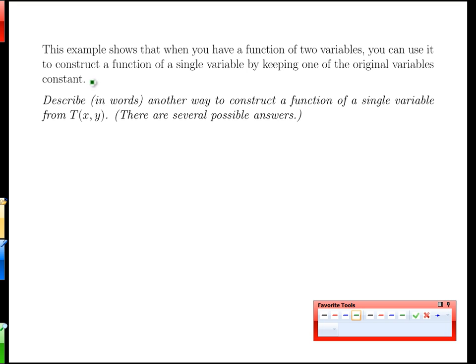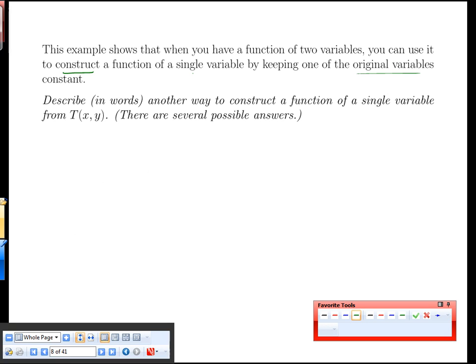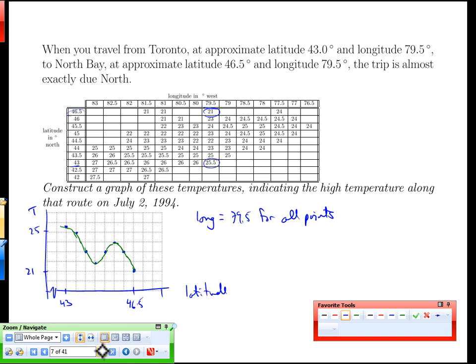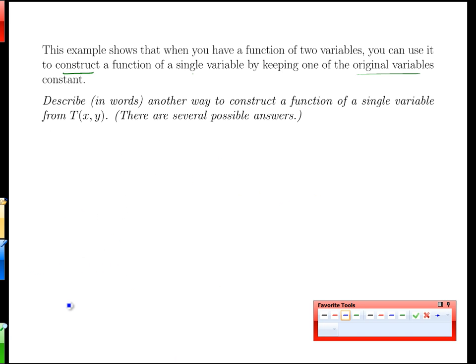What this example does is it shows that we have a function of two variables. We can construct a function of a single variable by keeping one of the original variables constant. We can tease out a single regular one-variable input, one-variable output function that is more like what we've seen before simply by restricting our consideration to one input variable.